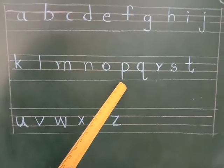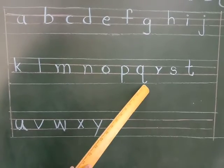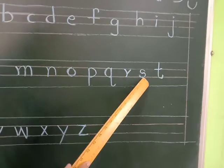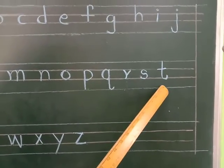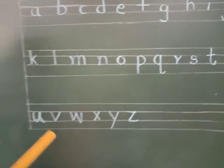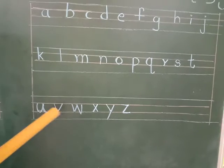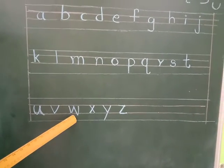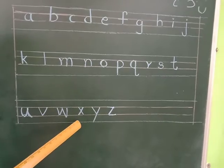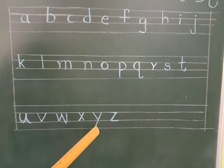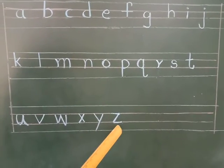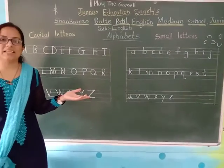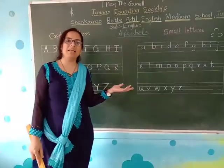Small o, small p, small q, small r, small s, small t, small u, small v, small w, small x, small y, small z. In this way we have learned how to write the baby letters.